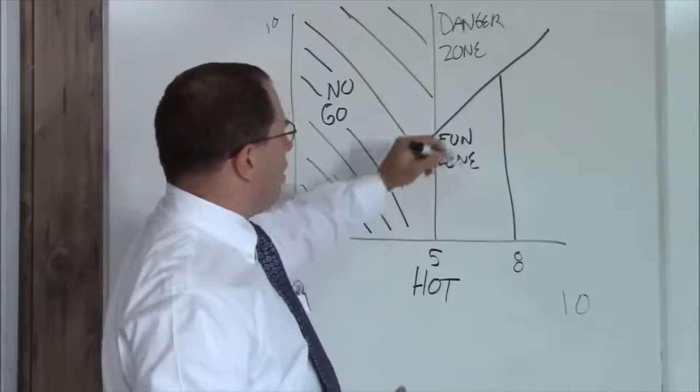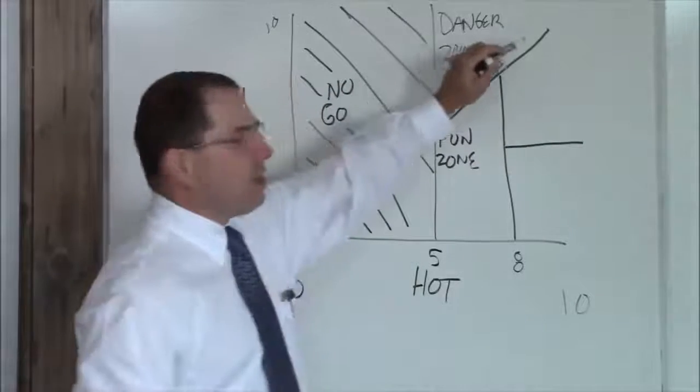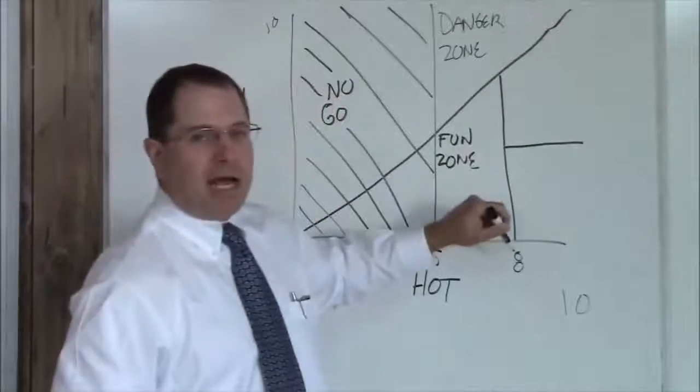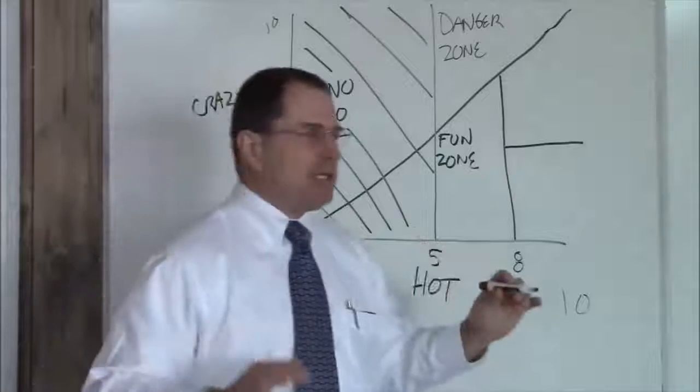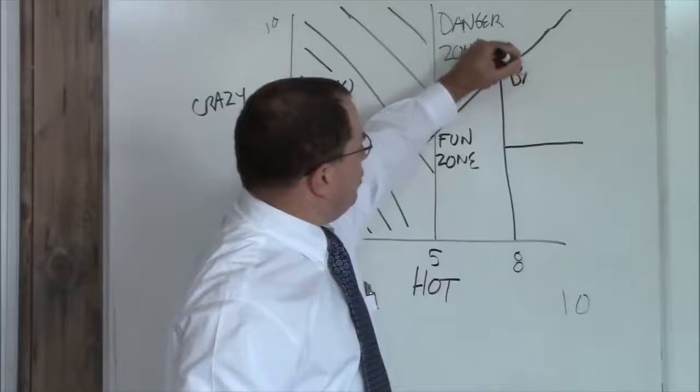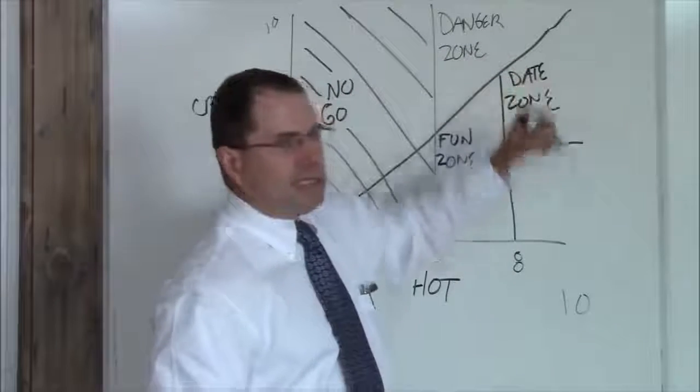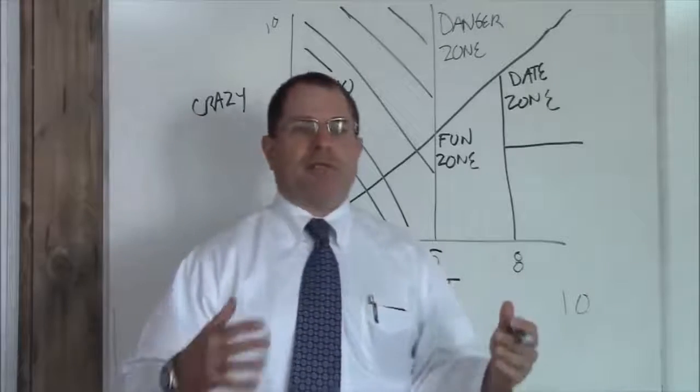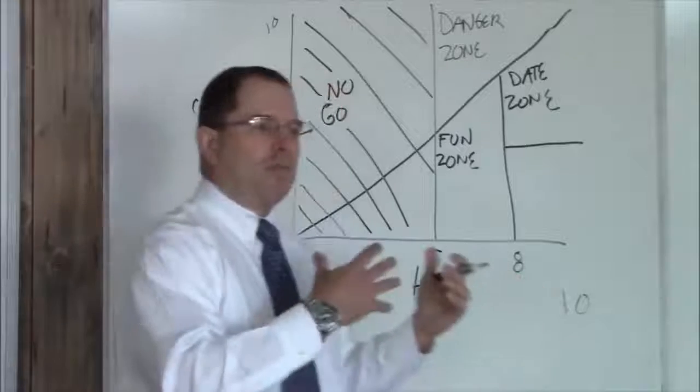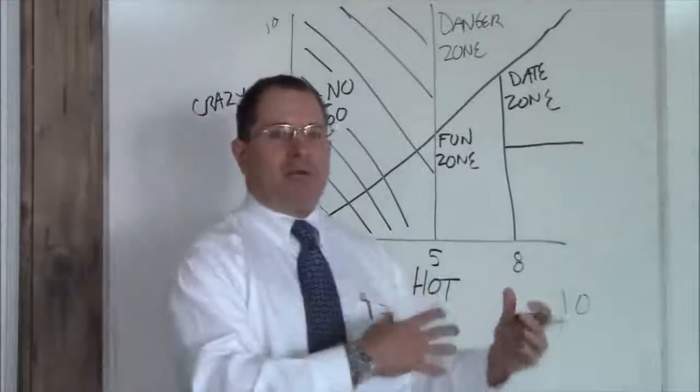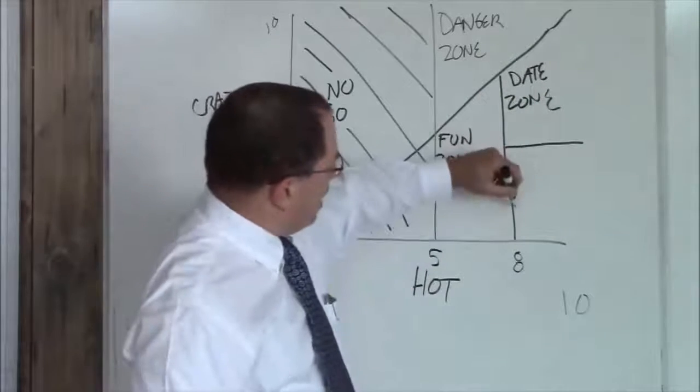Now, moving on, you have this zone here. This is below the crazy line, above an 8 hot, but still, you know, about a 7 crazy. This is your date zone. You can stay in the date zone indefinitely. These are women that you introduce to your friends and your family. They're good looking, and they're reasonably not crazy most of the time. So you can stay here indefinitely.